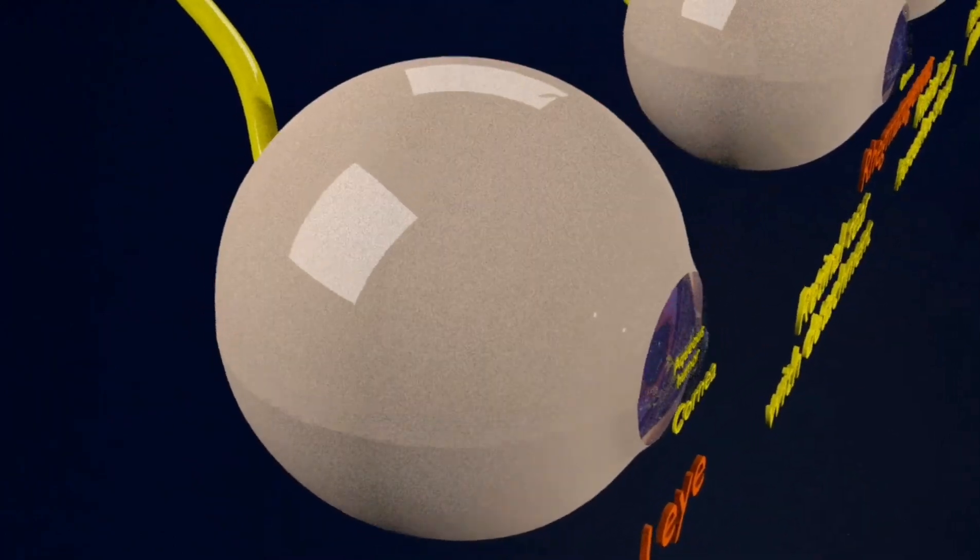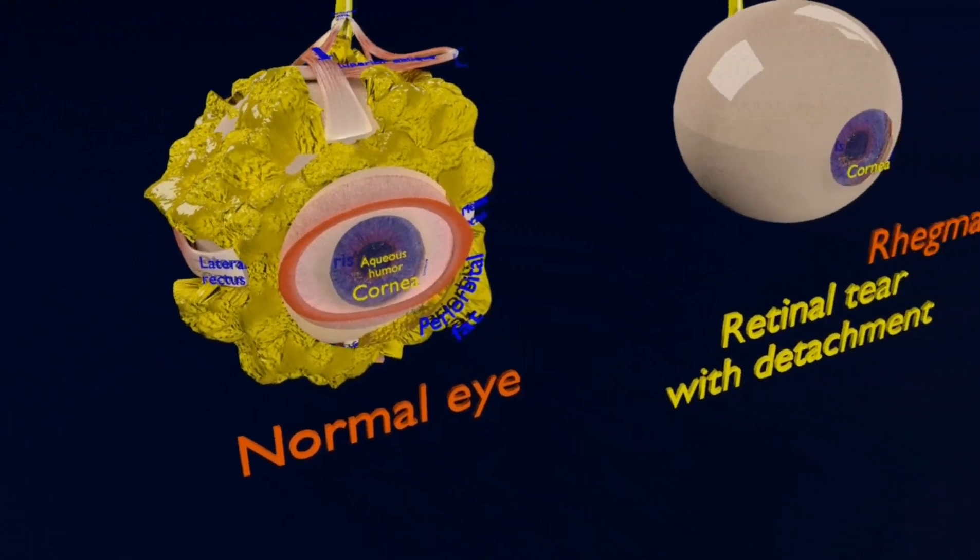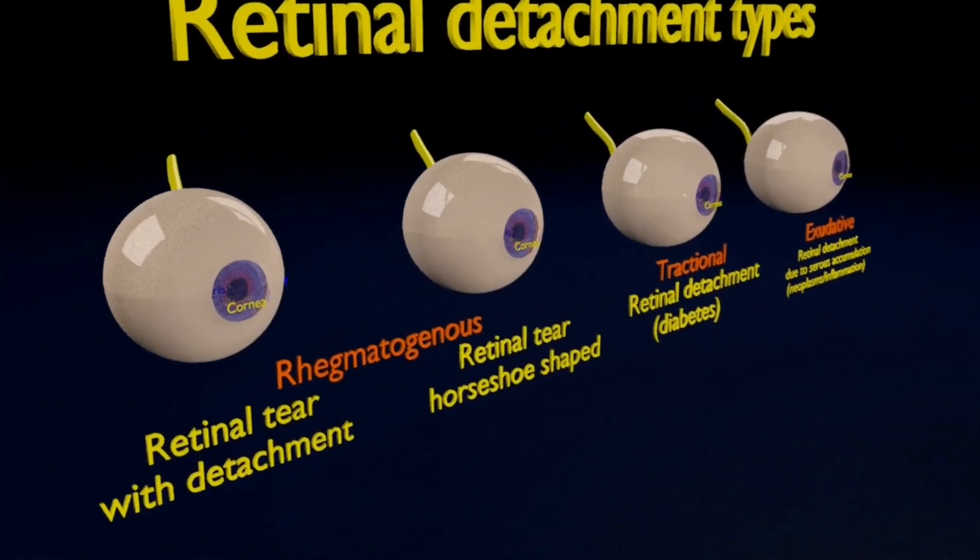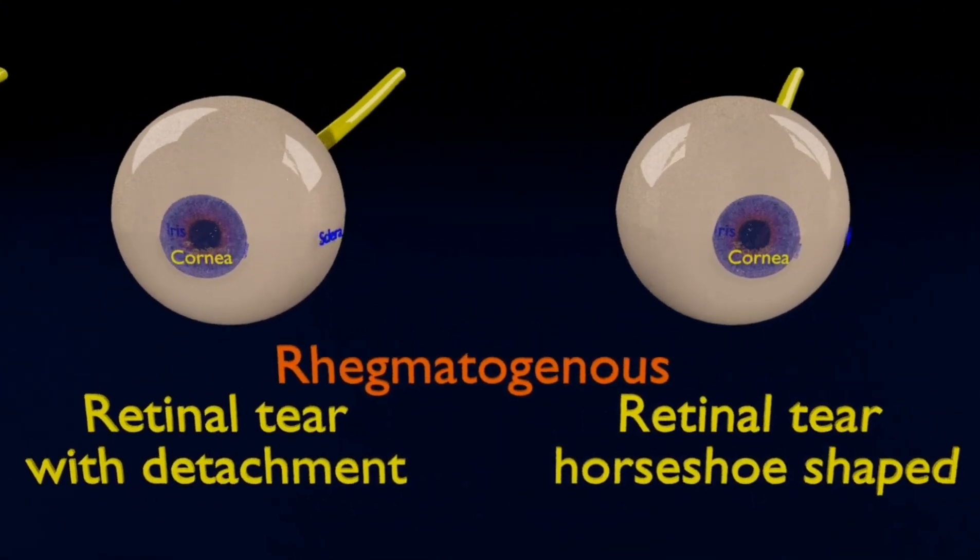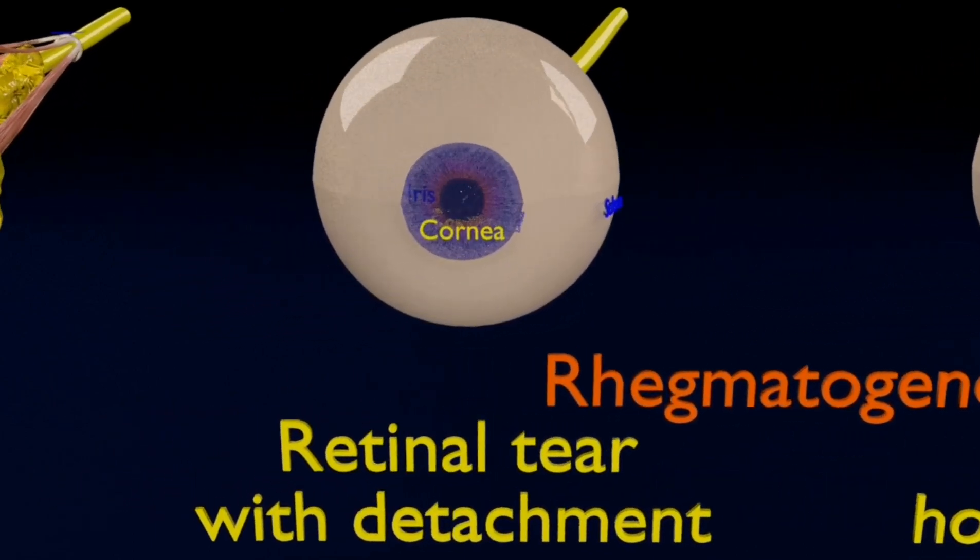Now going on to the first type of retinal detachment, i.e., the rhegmatogenous retinal detachment. Rhegmatogenous retinal detachment is the most common type of retinal detachment. It can happen if you have a small tear or break in your retina.